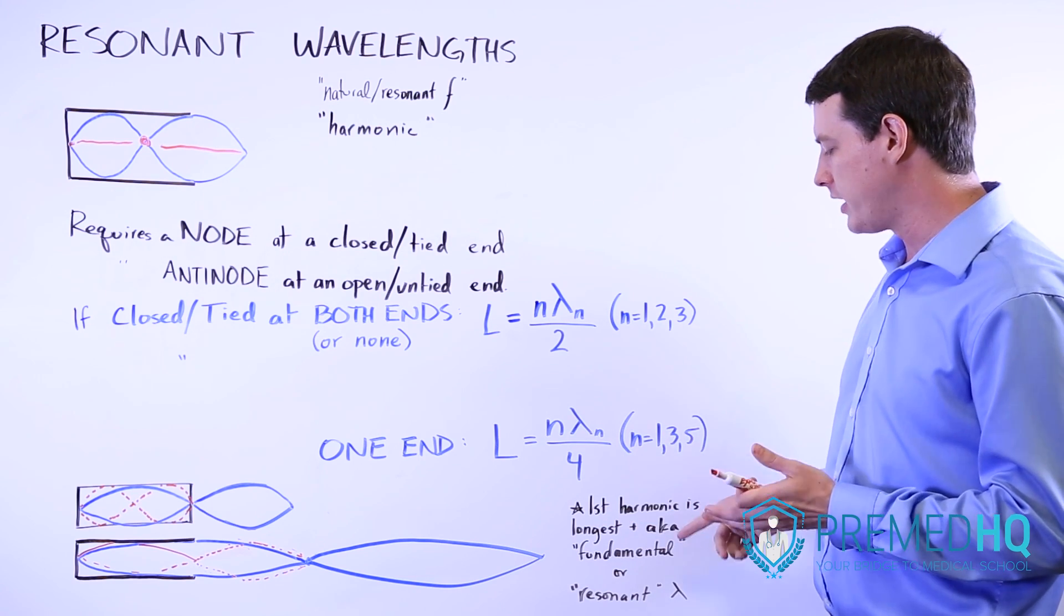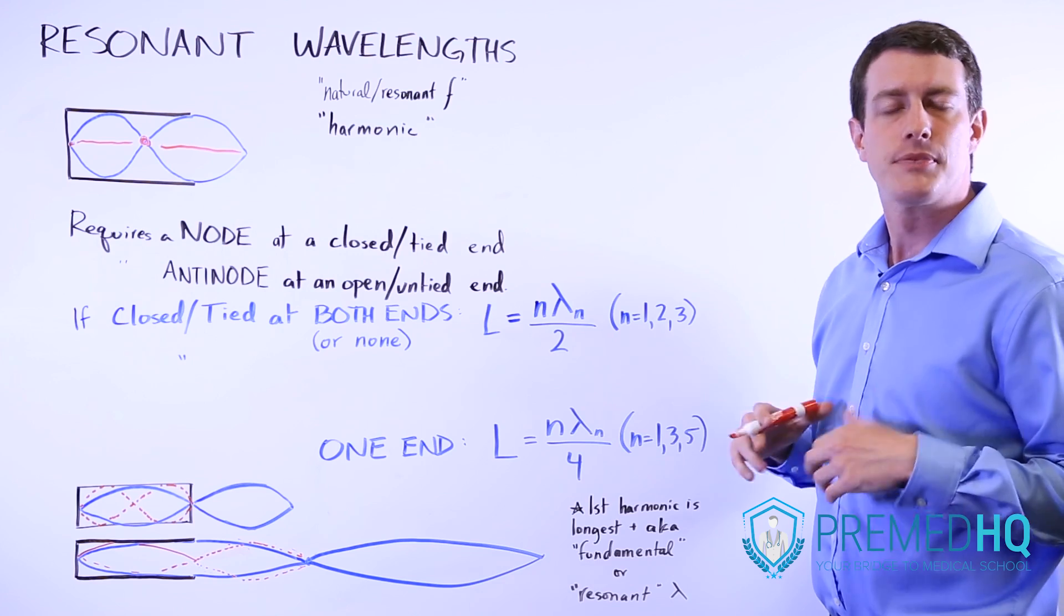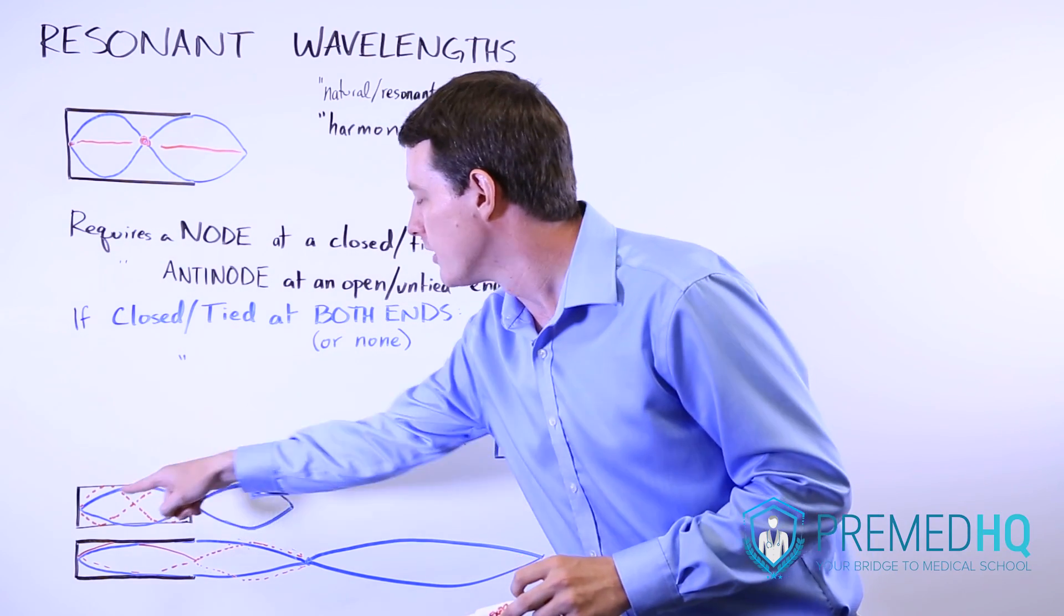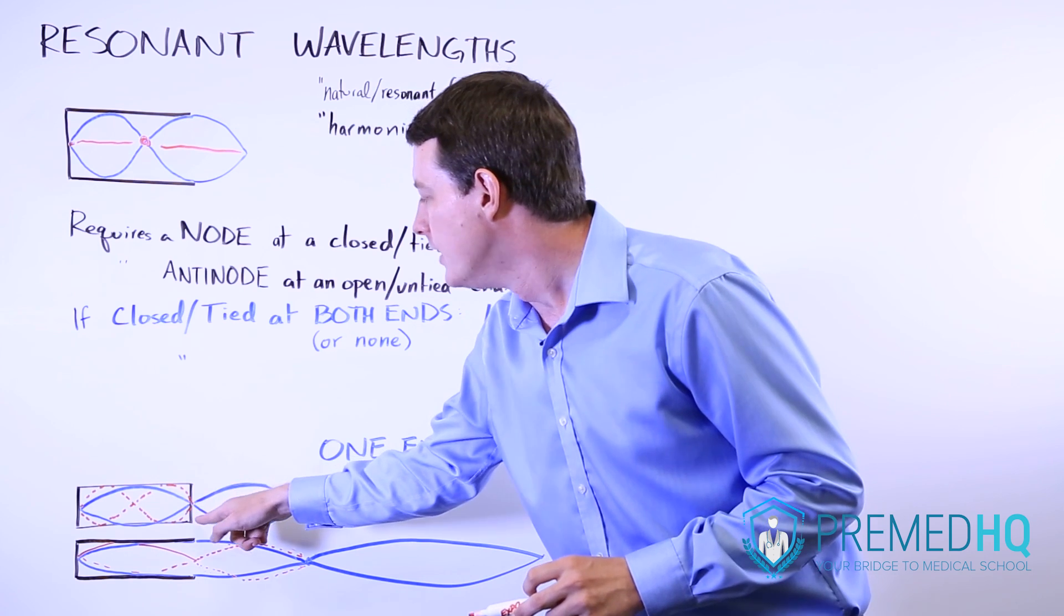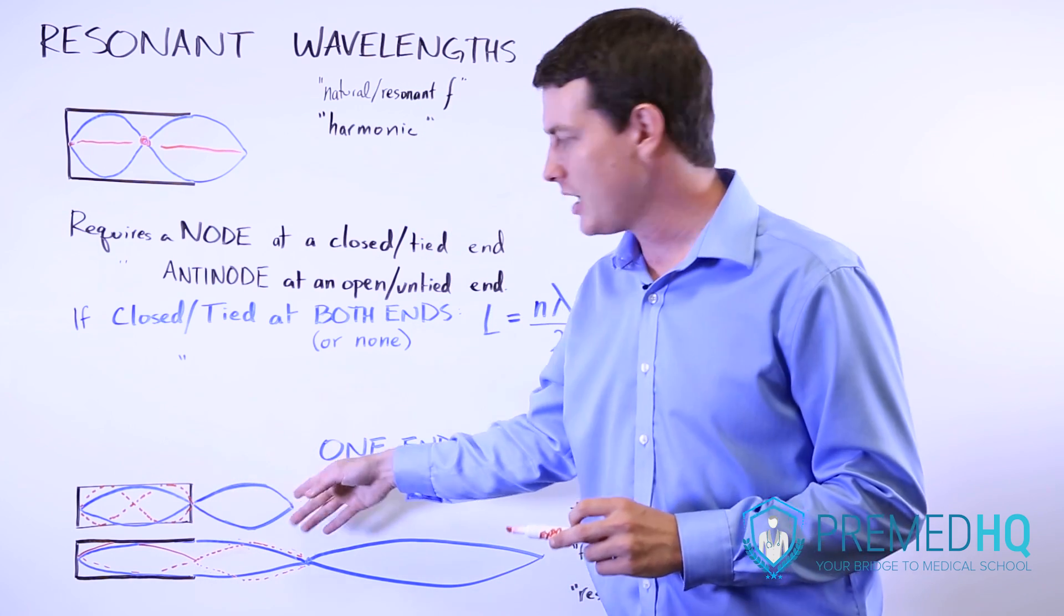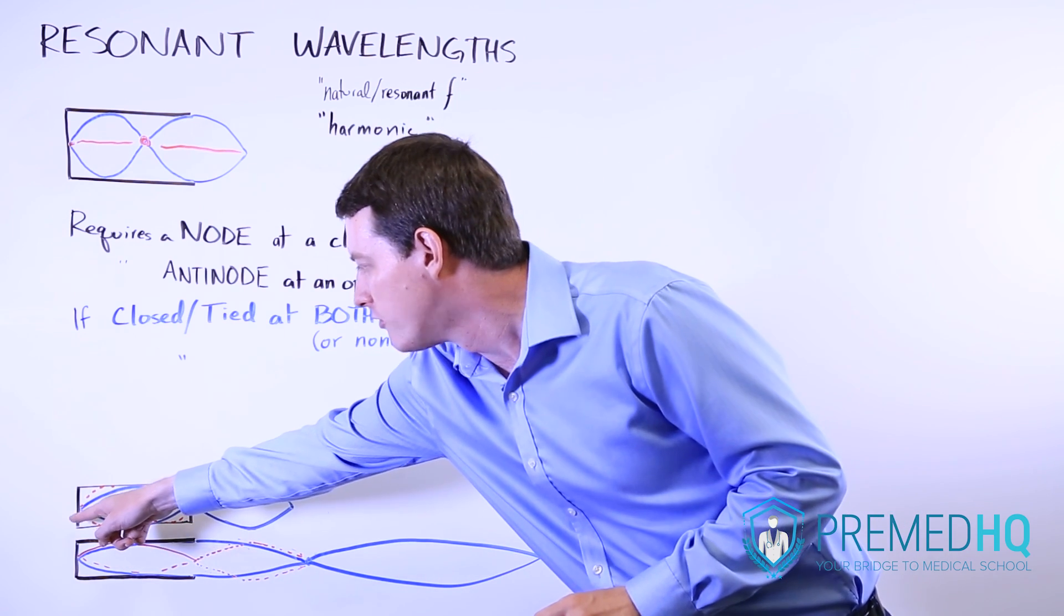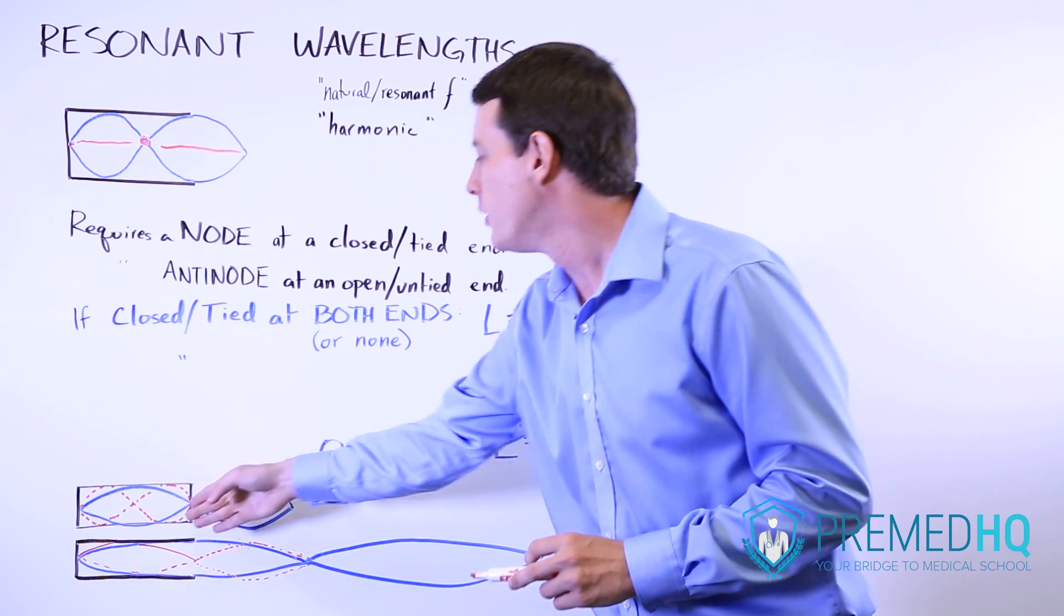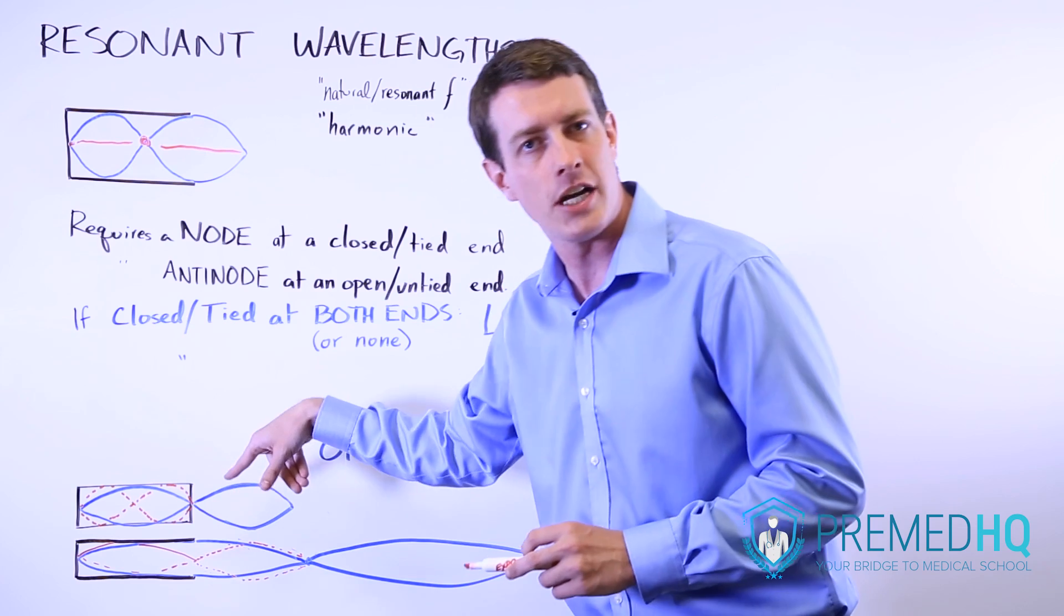which is also known as the first harmonic, the fundamental or the resonant wavelength, that will be something that is required to have a node here. And the longest thing that does that is going to be twice as long as the chamber. So if you draw out this whole waveform from when it rises to when it falls to when it comes back to that position, notice that it is twice as long as the chamber.